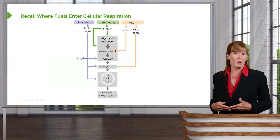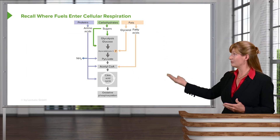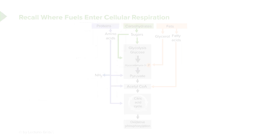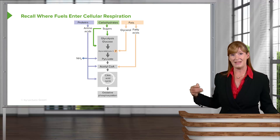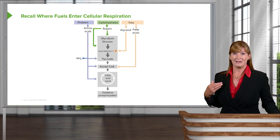What you will also want to do is recall where each of the different fuels are utilized in cellular respiration or metabolism. You've spent plenty of time examining those between anatomy and physiology, cell and molecular biology, and biochemistry. What you need to remember in the context of nutrition is where each of these sources enters into the respiratory cycle — is it utilized in glycolysis, is it utilized in the Krebs cycle? Keep those pathways in mind.